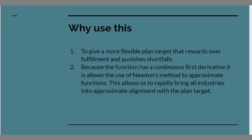Why do I use this? Well for one reason it's to give a more flexible plan target than Kantorovich's approach which specified exact proportionality between all outputs. That may not always be achievable. It may be possible to over fulfill the plan more for some products than others and that may be worth doing. Secondly because the function has a continuous first derivative it allows us to use Newton's approximation method for functions and this allows us rapidly to bring all the industries into approximate alignment with the plan target.